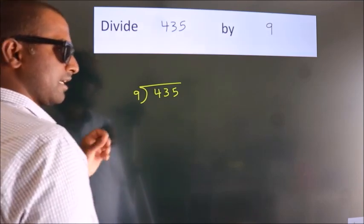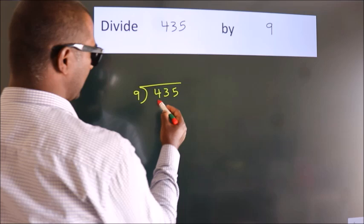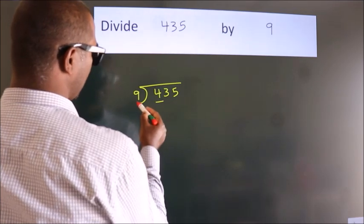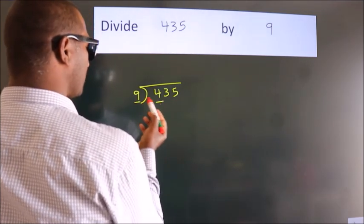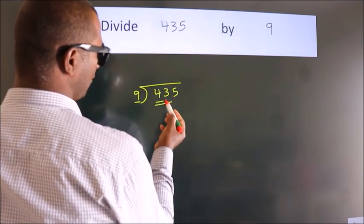This is your step 1. Next. Here we have 4. Here 9. 4 is smaller than 9. So we should take two numbers, 43.